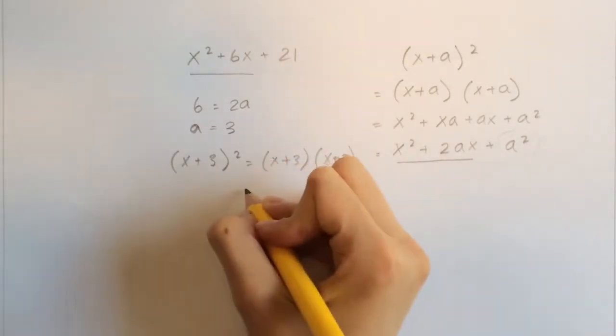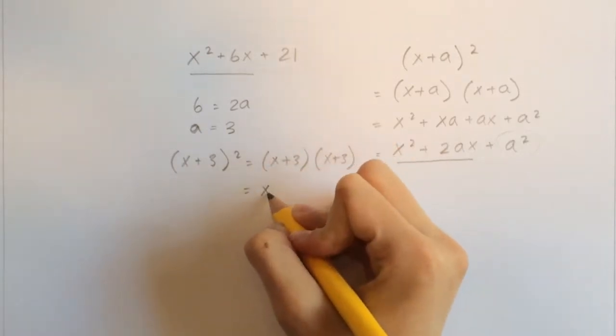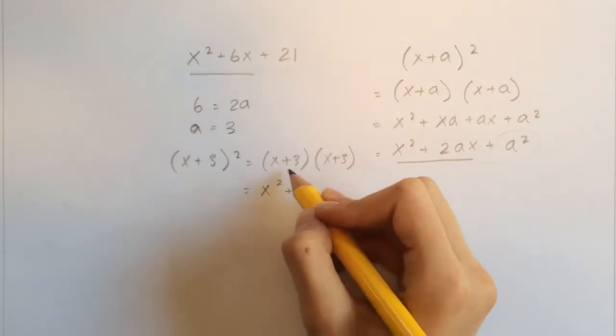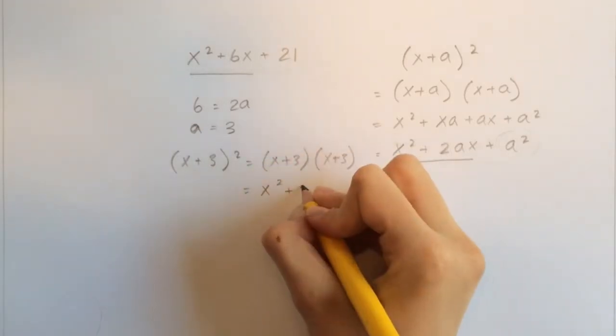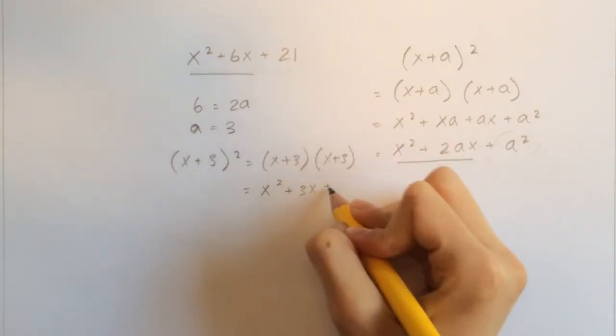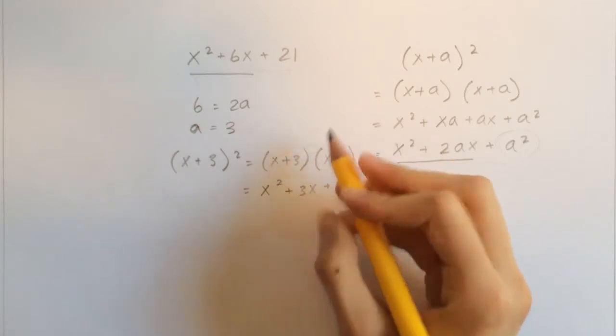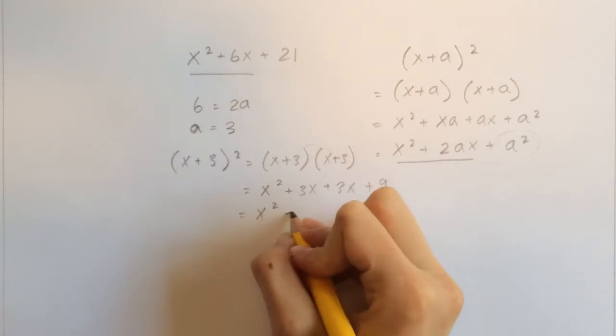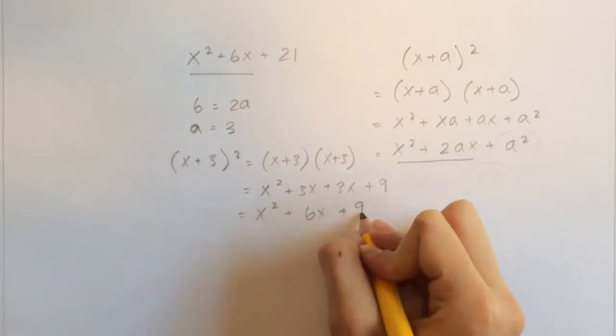And what is (x+3) times (x+3)? Well that is equal to x², right here, plus 3x, right here, plus 9. That's equal to x² + 6x + 9.